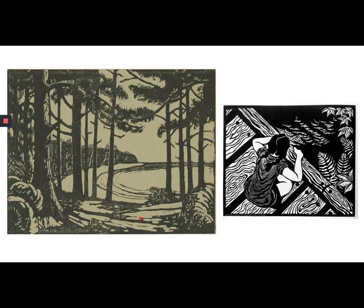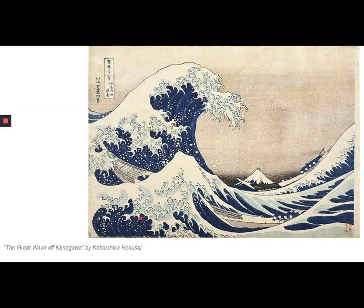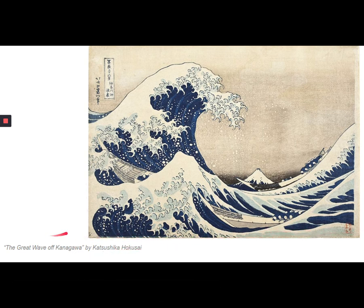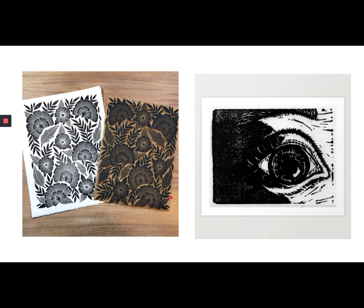A lot of people have seen this piece — it's a very old print. Many people think the Great Wave is a painting, but it's actually a print. When you have a print with multiple colors, each color is carved on a different block. So this artist had to create and carve a block just for the dark blue, a block for the light blue — all the different colors are separate runs.